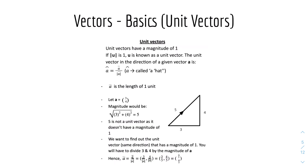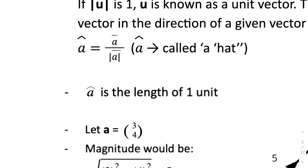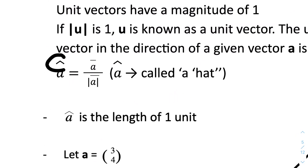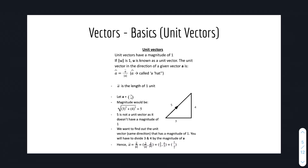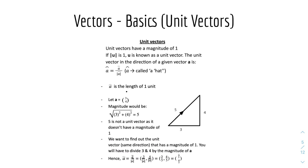So we have unit vectors. Unit vectors have a magnitude of one. If the magnitude of U is one, then U is known as a unit vector. Basically, the unit vector in the direction of a given vector A is A divided by its magnitude. So it essentially has the direction of the vector but with a magnitude of one. The notation for a unit vector is A with a little hat — we call it A hat. A hat equals the vector A over the magnitude of A.